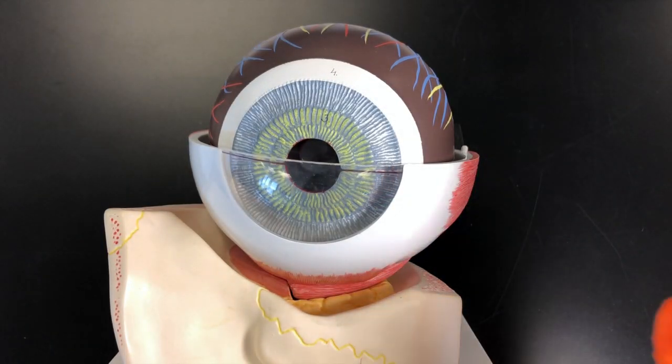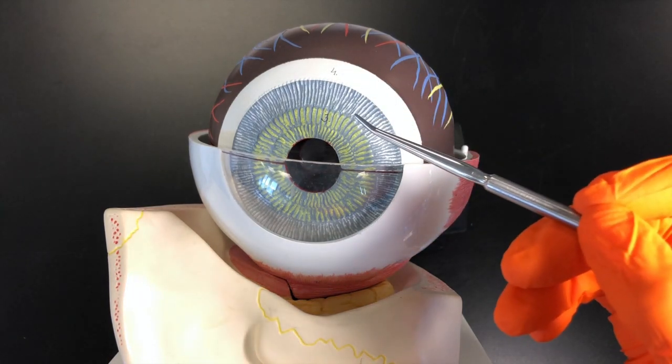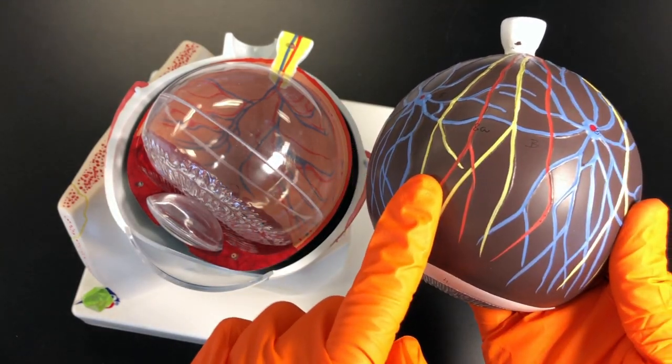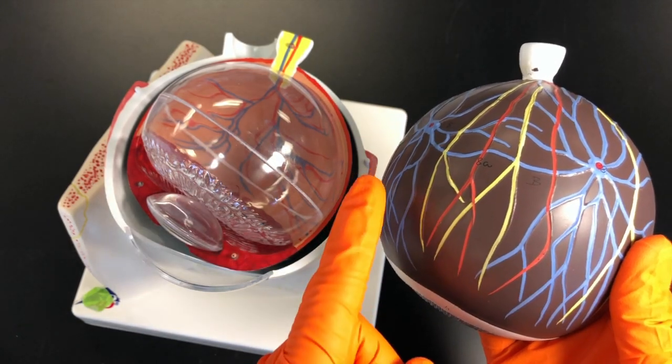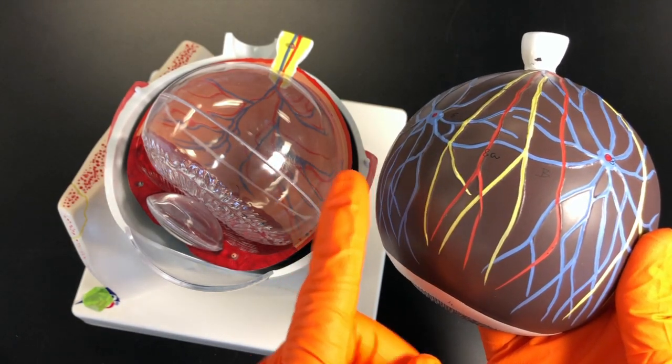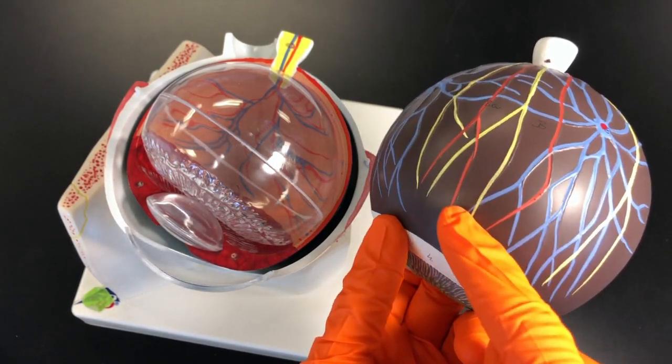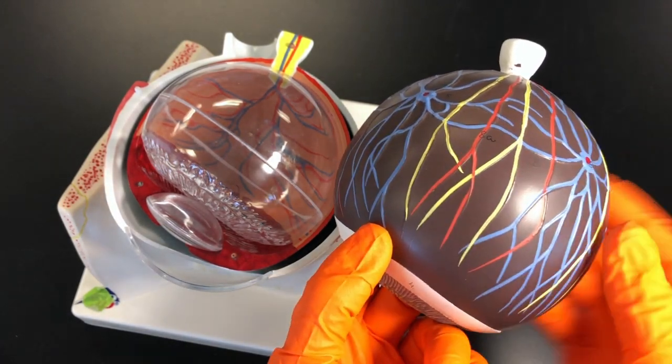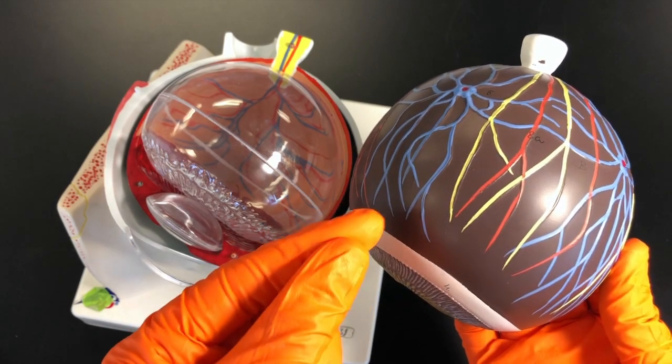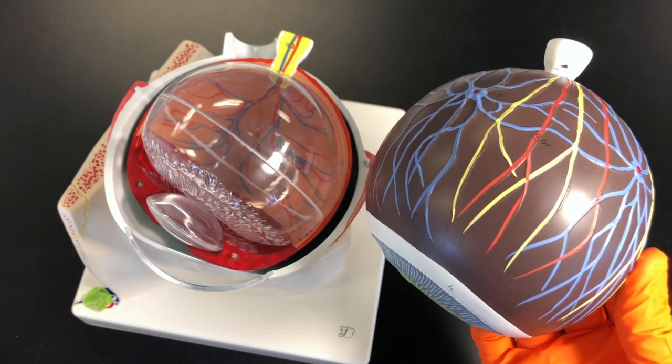The next tunic is the vascular tunic, which is made up of the choroid, the ciliary body, and the iris. The choroid is going to contain many blood vessels that help deliver oxygen and nutrients to the inner layer called the retina. It also has this really dark color from melanocytes which produce melanin. That melanin can absorb extra light that comes into the eye and help prevent it from scattering.